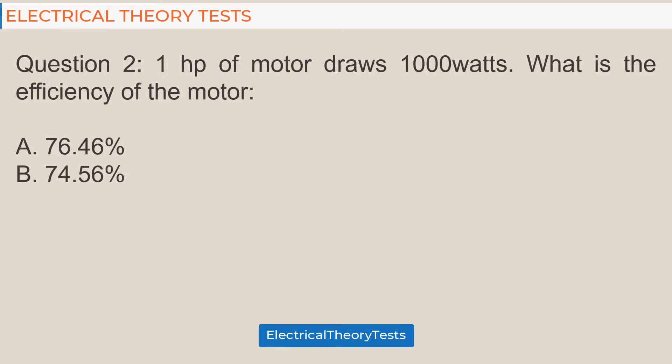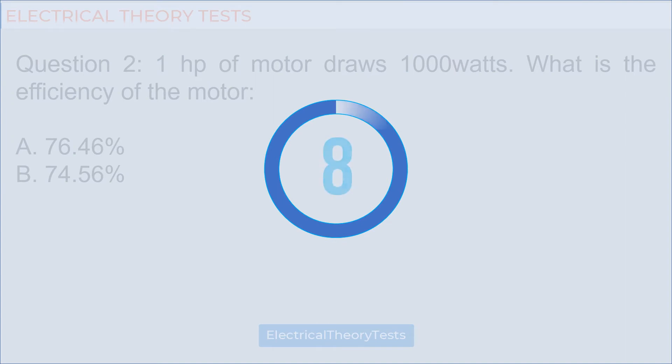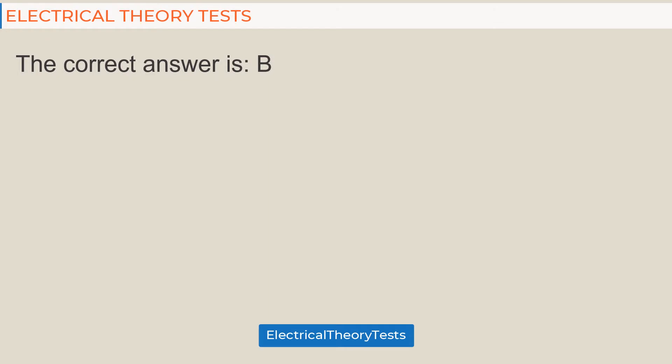Question 2: One horsepower of motor draws 1000 watts. What is the efficiency of the motor? A: 76.46%, B: 74.56%. The correct answer is B.